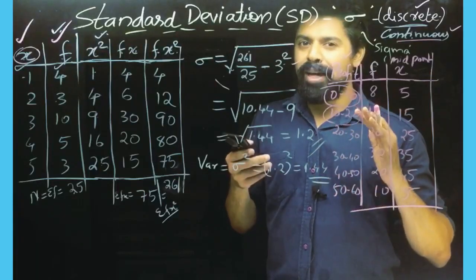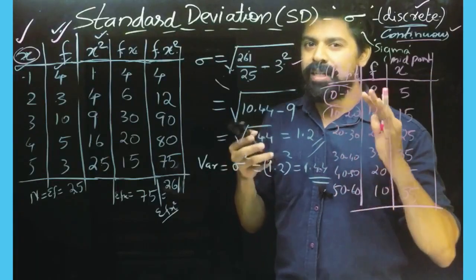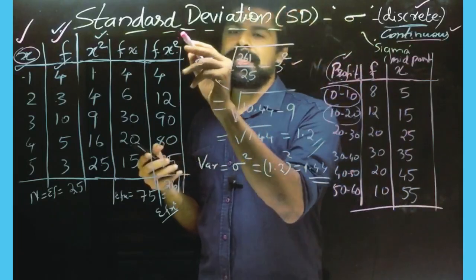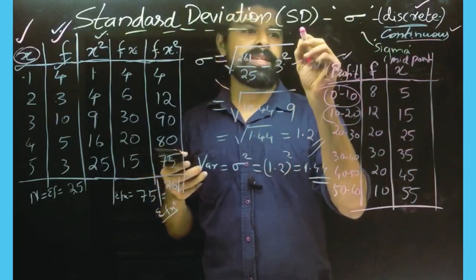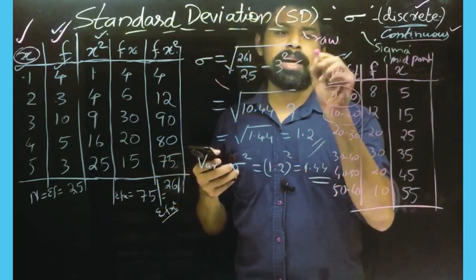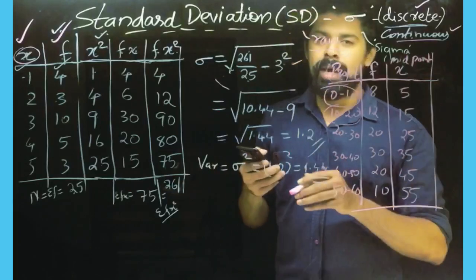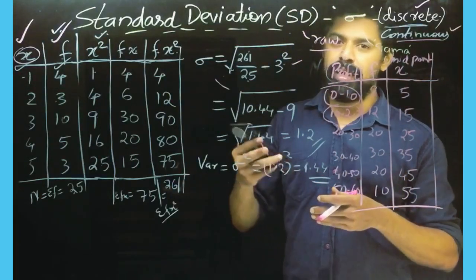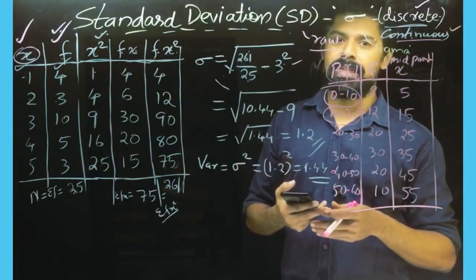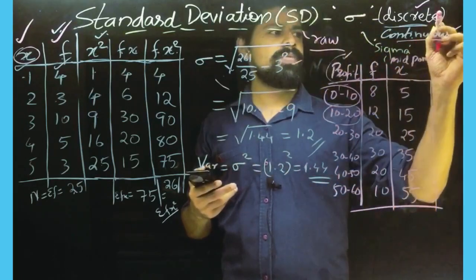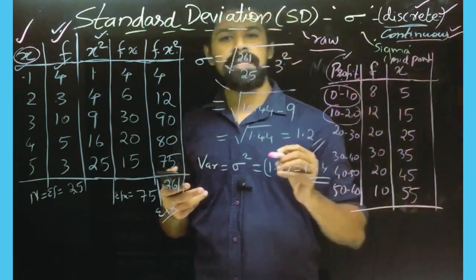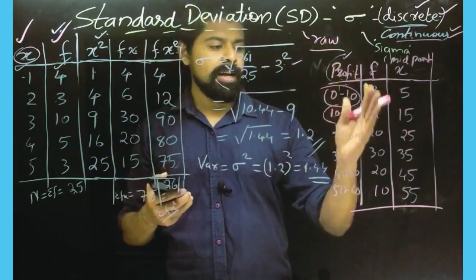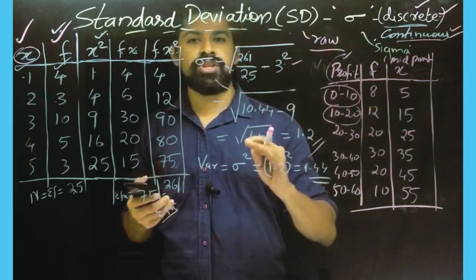In the StatLive Blog, we are learning about dispersion and standard deviation. In the standard deviation, we are using a rod. We are learning about the standard deviation and variance. We are learning about discrete and continuous frequency tables.